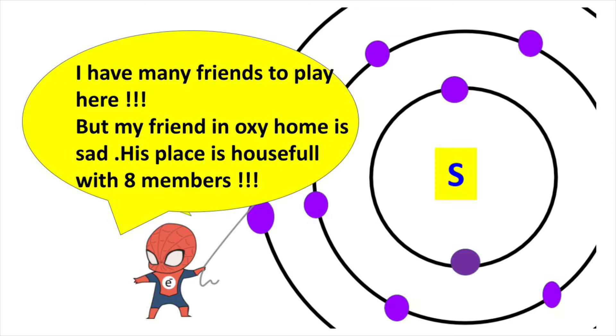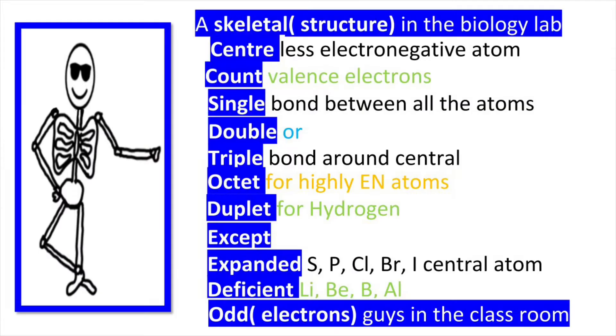Welcome to Aurora Chemistry for everyone. Let us analyze how to write Lewis structure of H2SO4 by using a beautiful mnemonic: Skeletal in the biology lab, center, count, single, double, triple, octet, duplet, except expanded, deficient, odd guys in the classroom. These mnemonics help you remember all the steps involved in writing Lewis structure.